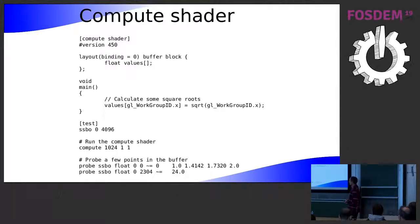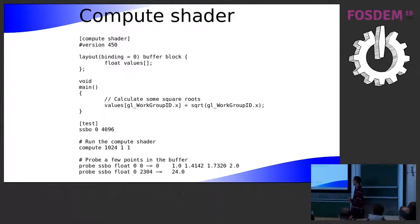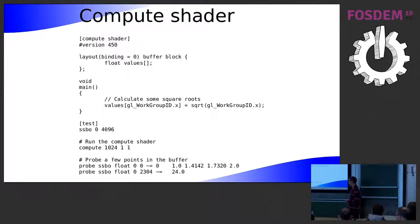VKRunner supports all the shader stages, including compute shaders. This is a simple example using an SSBO — it fills in a table of square roots. Instead of a draw command, you just have a command to dispatch the compute. It's not writing to the frame buffer but to an SSBO, and you can probe the values in the SSBO.